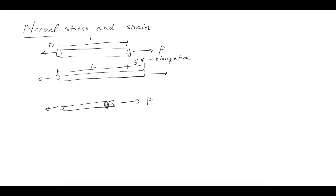This distributed internal force over the cross-sectional surface area is called a normal stress, because it's normal to the cut plane. The way we write stress is sigma, and in this case it's simply equal to P over A. This Greek letter sigma is almost exclusively used to represent stress. Of course, this equation depends on the particular setup we've selected.